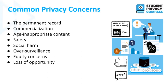And then there's loss of opportunity — fear that all of the above concerns: the permanent record, social harm, over-surveillance, and equity issues could lead to missed opportunities, whether in school qualifying for AP courses, getting a job, getting into college, or getting an internship. The data collected and its seeming permanence could lead to fewer future opportunities, and you may not even know about those missed opportunities that came from something that happened when you were younger.